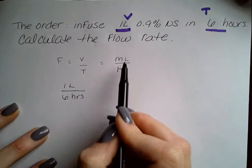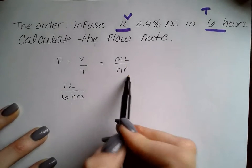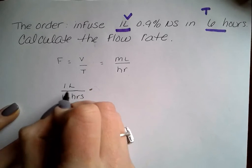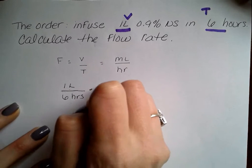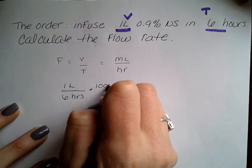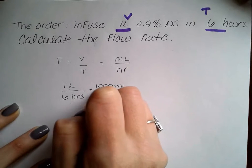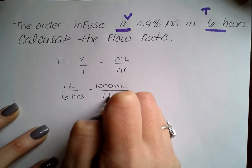However, we need our units in milliliters per hour. So we need to convert one liter to milliliters. We know that there are a thousand milliliters in one liter.